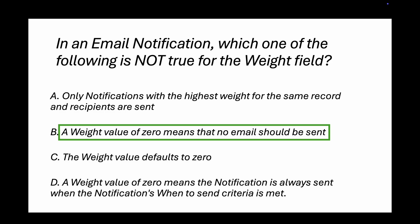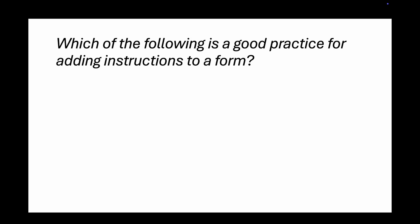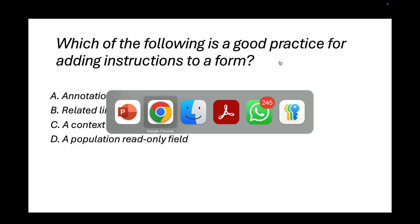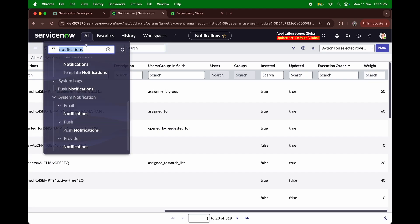Question number three: which of the following is a good practice for adding instructions to a form? Options are: annotations, related links to wiki pages, a context menu UI action, or a populated read-only field. Most of the time we use annotations — I'll show you using catalog items.